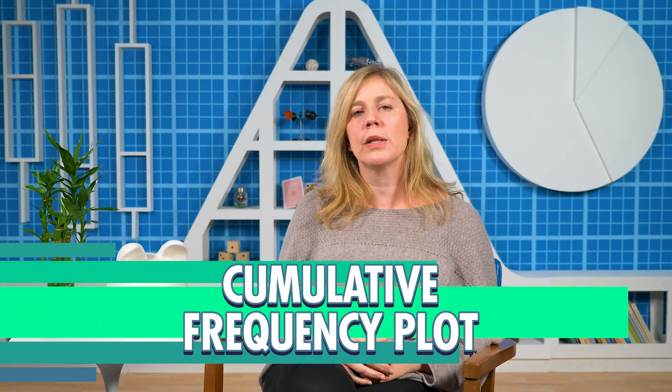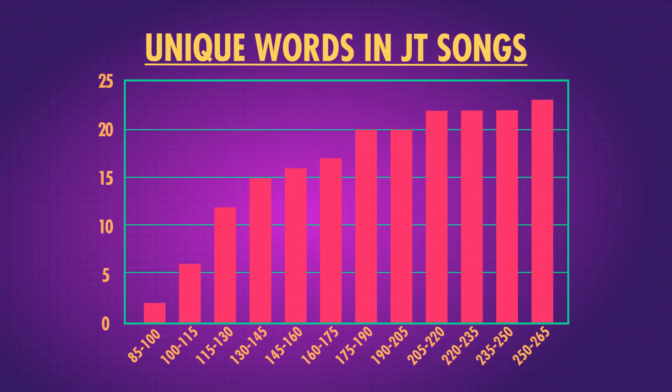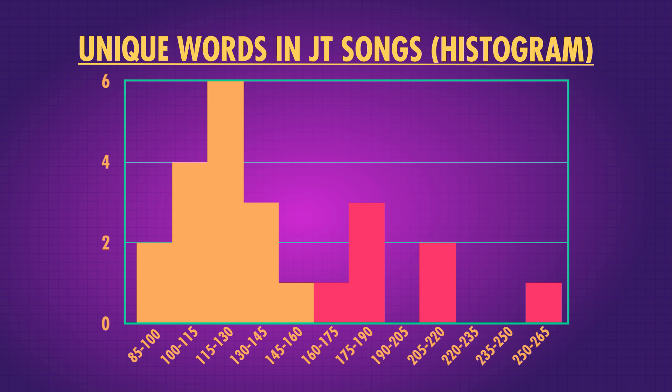Now let's go back to frequency plots and talk about one last method for visualizing quantitative data: the cumulative frequency plot. Cumulative frequency plots are like histograms, but instead of the height of a bar telling you how much data is in that specific bin, it tells you how much data is in that bin and all previous bins — that's why it's called cumulative. It's the frequency of all the points accumulated up to that point, like a small fish getting eaten by a bigger fish, which gets eaten by an even bigger fish. These plots shine when we want to answer a question like: how many Justin Timberlake songs have 160 unique words or fewer? We could also get this by counting bars on a histogram, but the cumulative frequency plot makes it much easier.